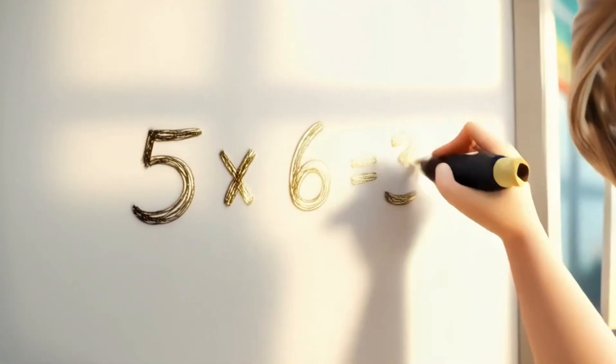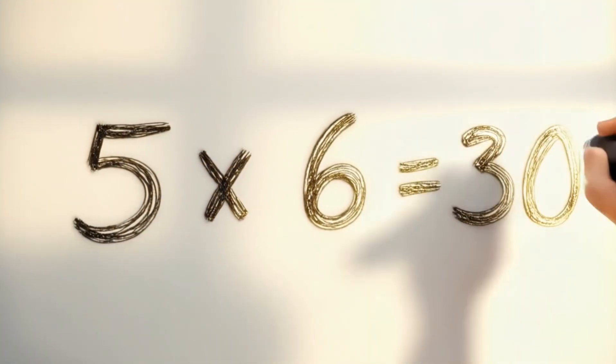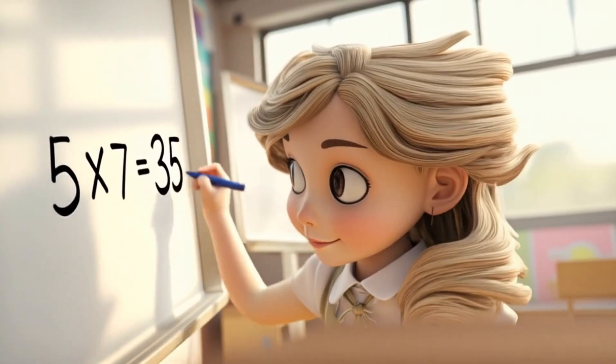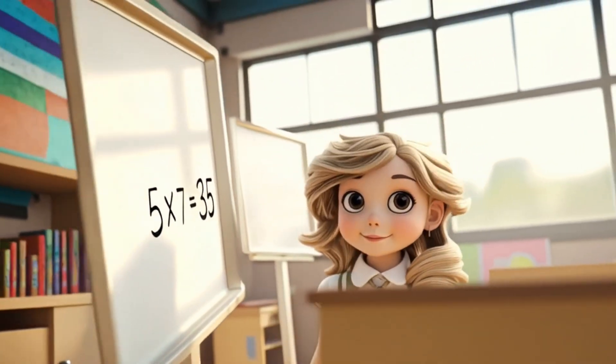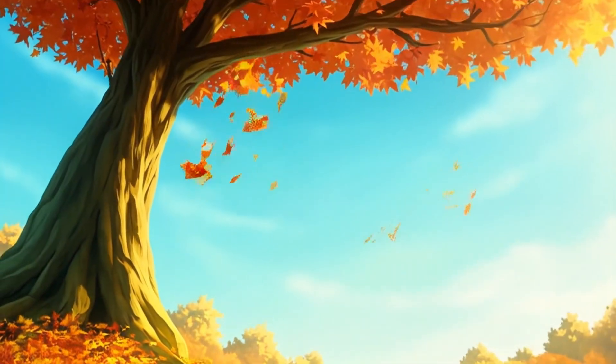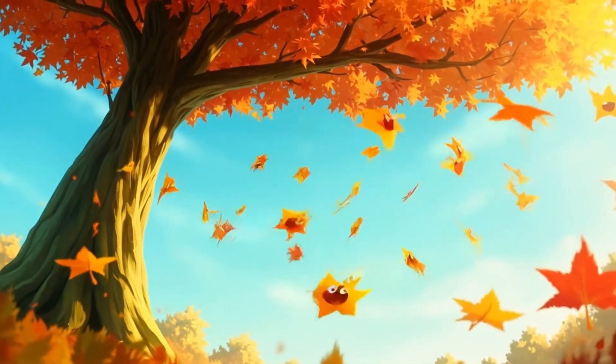Five times six is thirty. Thirty little lights shine so pretty. Five times seven is thirty-five. Thirty-five leaves in the wind arrived.